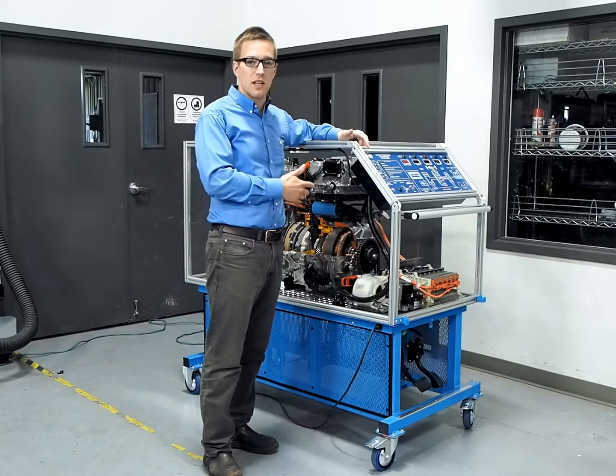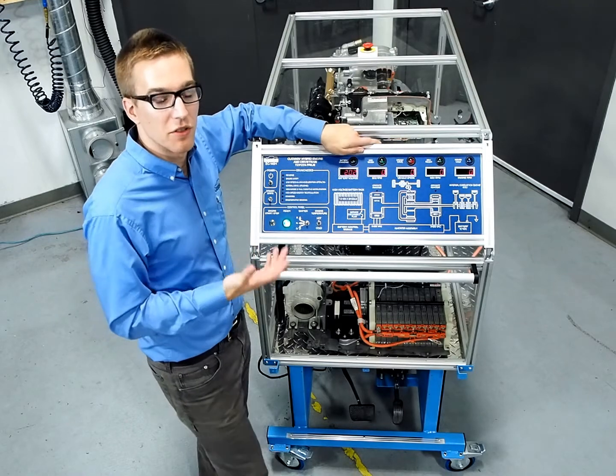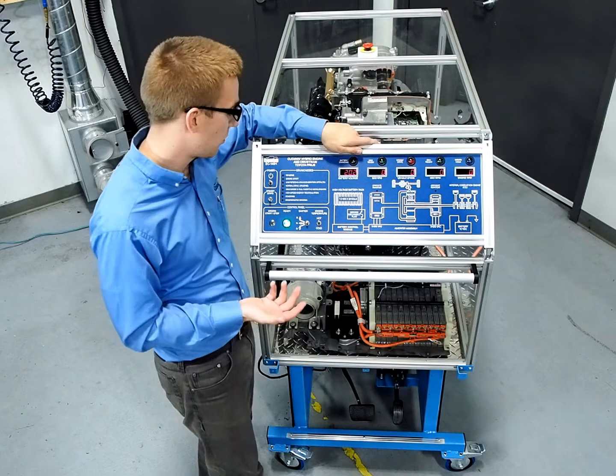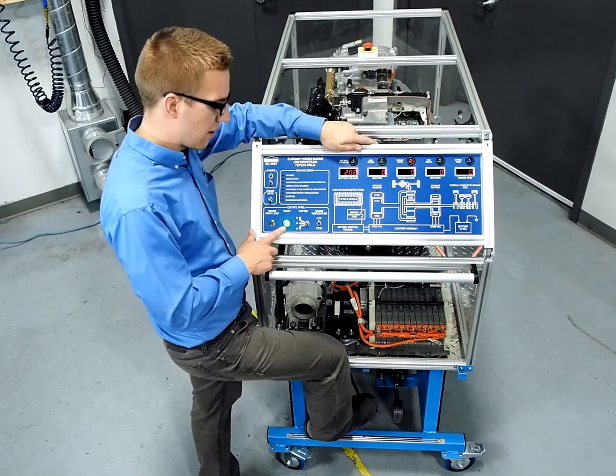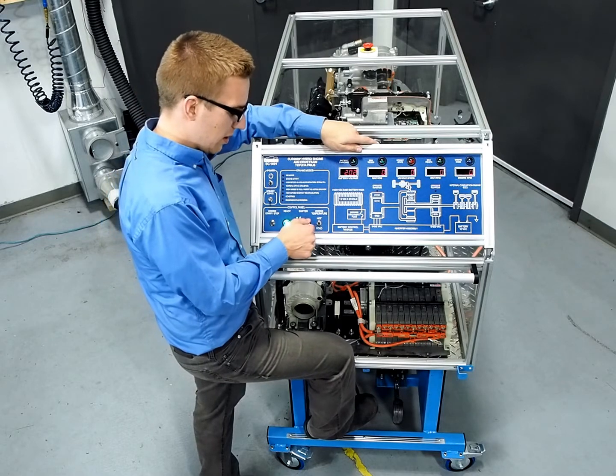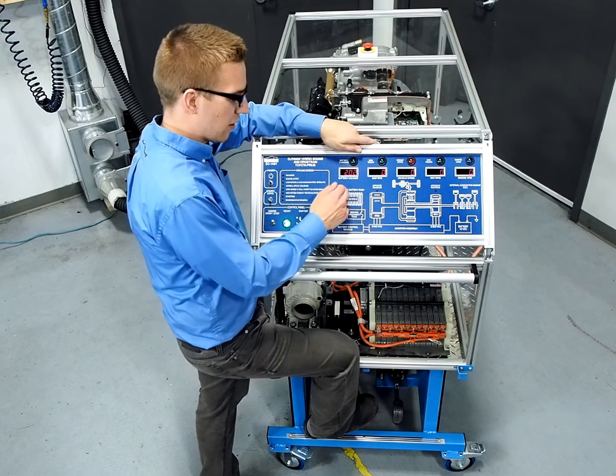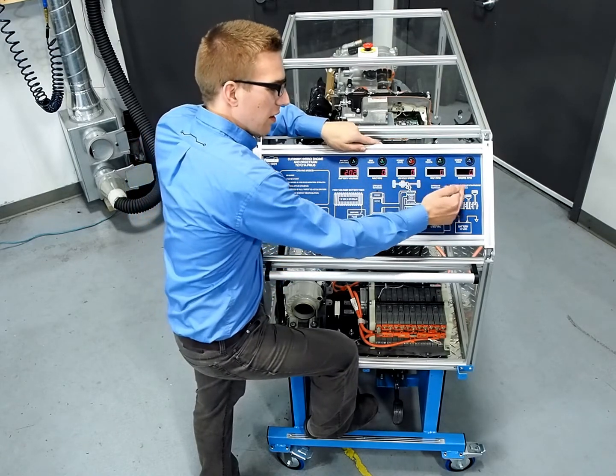So let's take a look at how it works. Now giving demonstrations using the trainer is as easy as driving a hybrid vehicle. We get in the car, we put our foot on the brake, press start, we've got the ready light on. Now if I put it in drive with my foot on the brake, we've got five different displays across here: battery voltage, MG2, vehicle speed, MG1, and engine RPM.